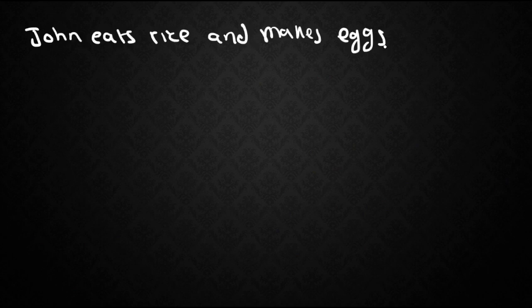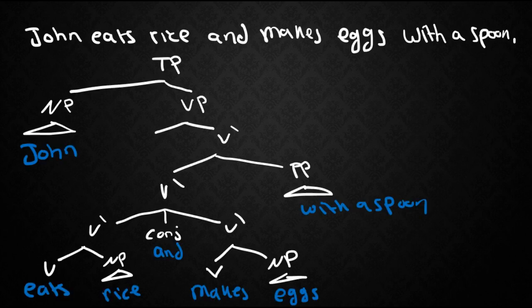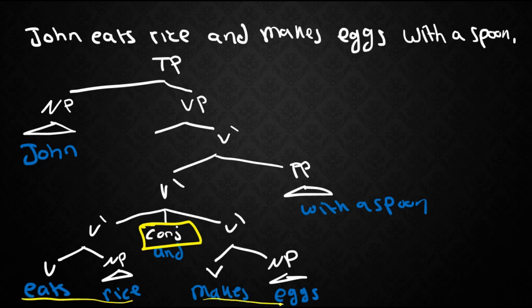Here's a second test just to make sure. John eats rice and makes eggs with a spoon. This is what it would look like in x bar notation. Again recall that one of the constituency tests was the coordination and conjunction test and once again the idea was that if you can coordinate two constituents together that means they must be of the same type. So we were able to coordinate eats rice with makes eggs.